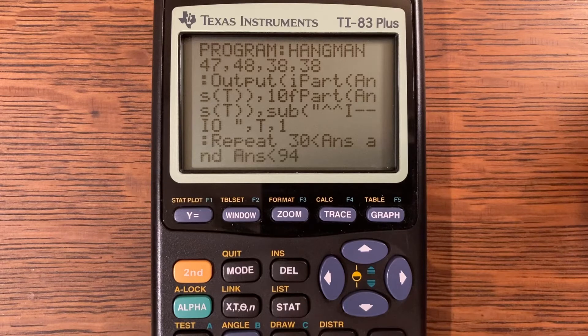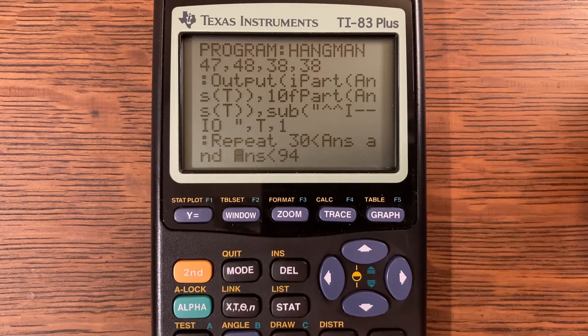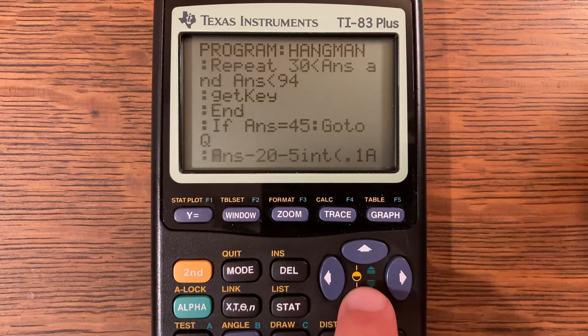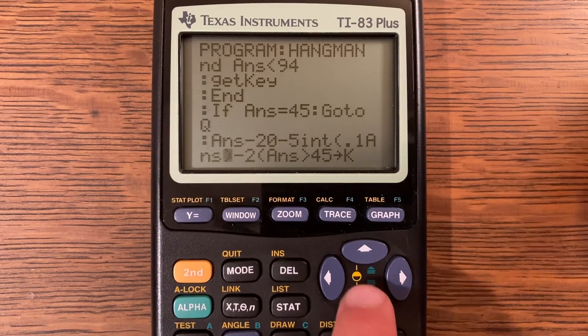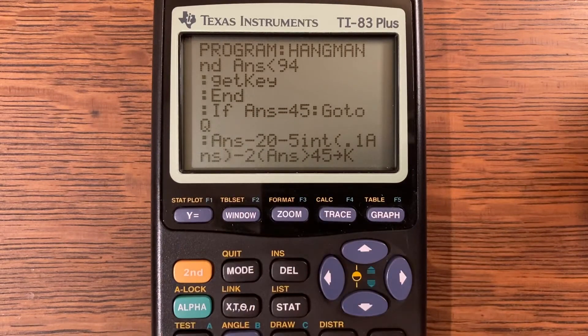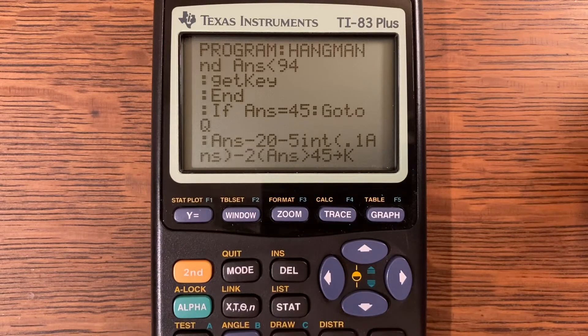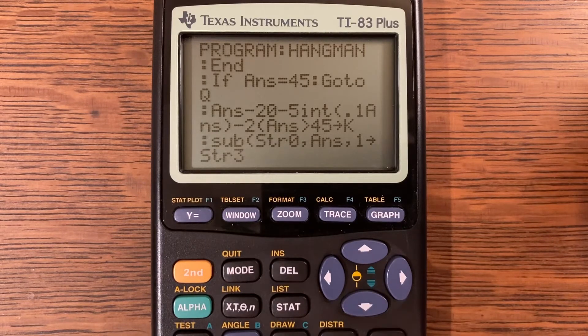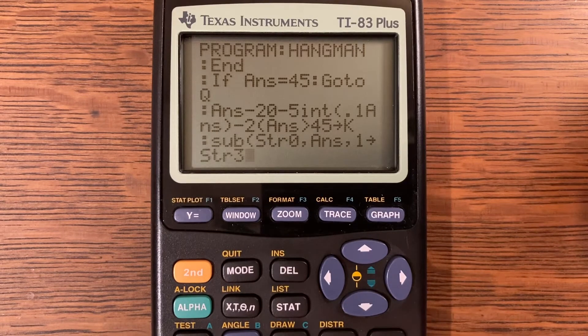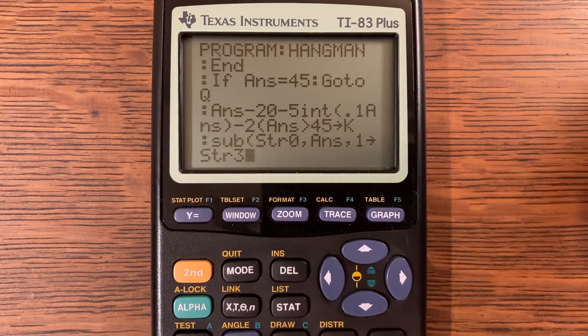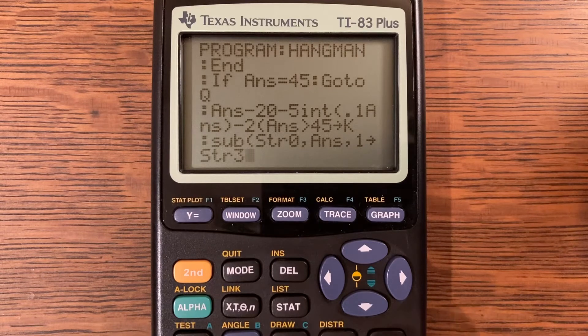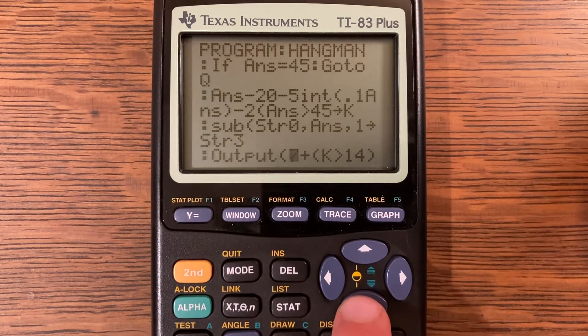Repeat until 30 is less than answer and answer is less than 94. Get key. If answer is equal to 45, go to q. Basically it's saying if you click 45, it's ending the program because label q is at the very end of the program. Answer minus 20 minus 5 multiplied by the integer 0.1 answer minus 2, answer is greater than 45, store into k.